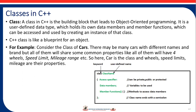For example, consider a car. There may be many cars with different names and brands, but all of them share common properties like four wheels, speed limit, mileage range, etc. Here, car is the class and wheels, speed limit, and mileage are its properties.